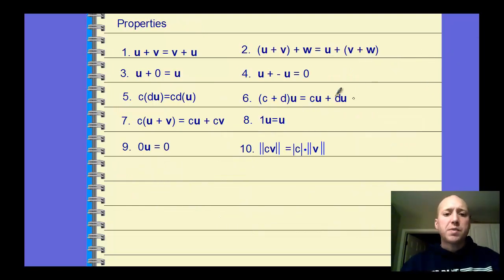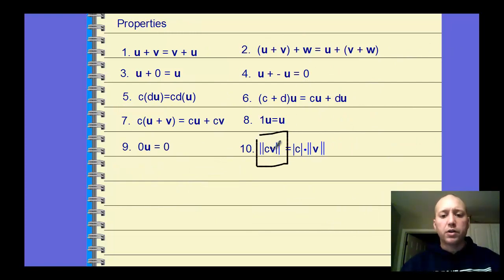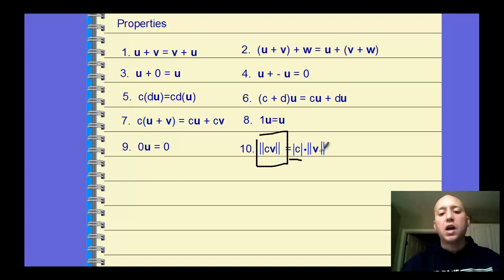These properties I'm not going to go over in detail — basically the properties you've learned in the past apply to vectors. The one to note is that the magnitude of some scalar times a vector: you can pull that scalar out as an absolute value times the magnitude of the vector.